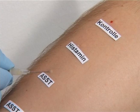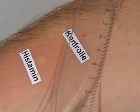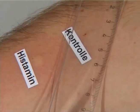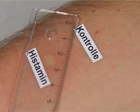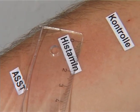The first test reading takes place after 15 minutes. The diameter of the wheel that has developed at the site of injection is measured with a transparent ruler. In this case, there is no reaction. The positive control histamine should be undoubtedly positive. The result is entered into the lab report.